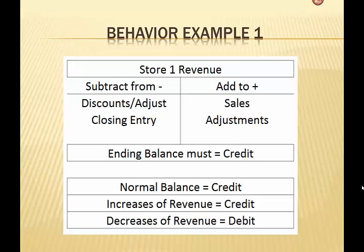Here's an example — we're going to go through several and you'll see they all look very much the same. We have a Store 1 revenue account, classified as revenue. When we add to this account, we're crediting that account. So any time we have a sale, we're going to credit that account because we are adding to our revenue. We can make adjustments for various reasons — discounts, accounting errors, and so on. The account is only closed out at the end of the month with a closing entry that clears it out. The important thing to note is that any time we have a sale, we are crediting revenue, and that means we're adding to it.